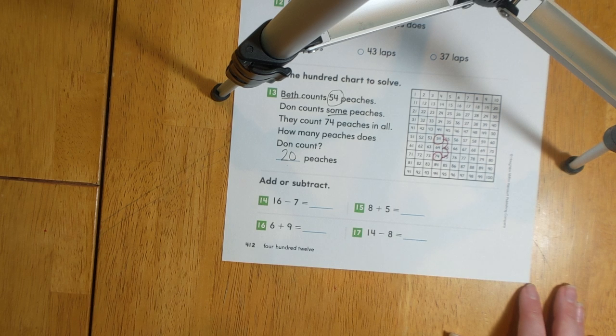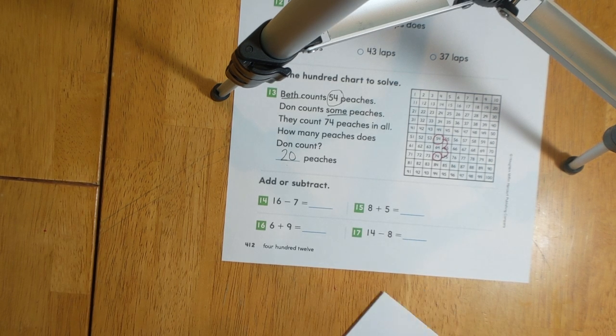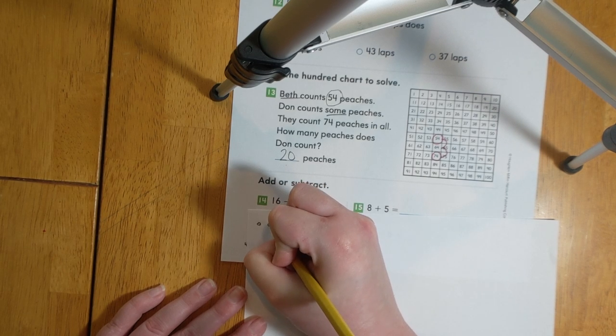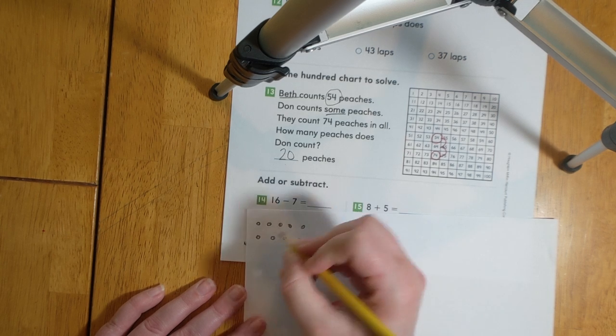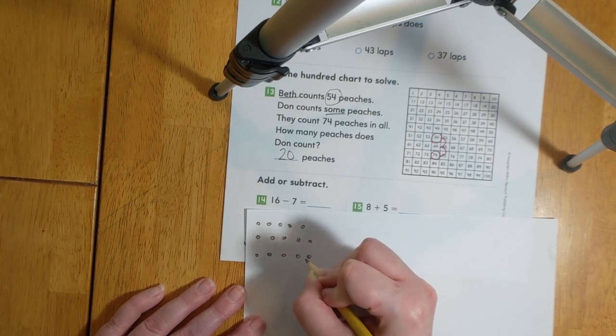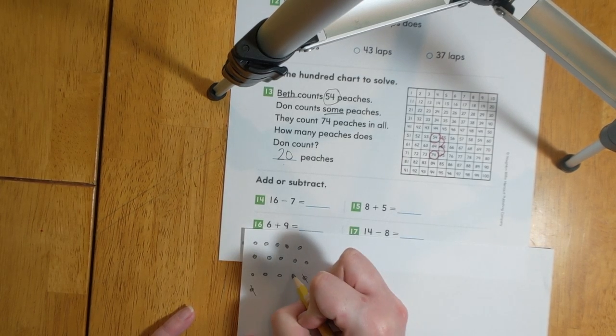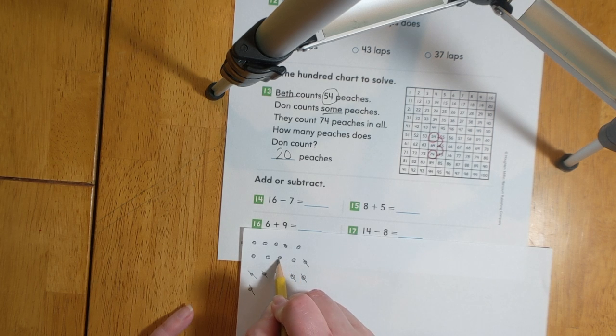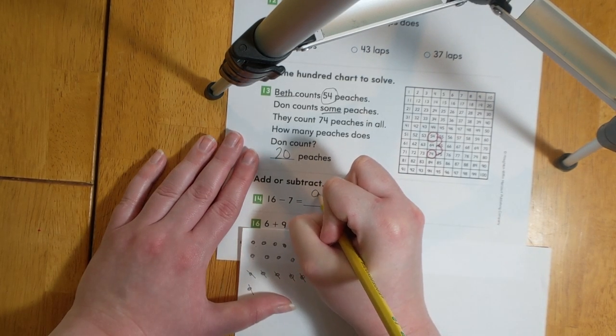For numbers 14 through 17, we're going to add or subtract. Number 14 is 16 minus 7. Let's go ahead and draw a picture to solve. I'll start by drawing 16 ones. Then we're going to subtract 7. That leaves us with 9. So 16 minus 7 equals 9.